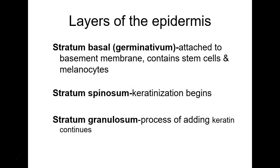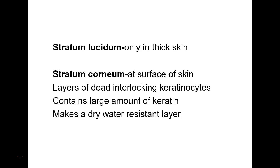Right above that, keratinization begins. Keratin is just a protein found throughout this tissue, not just in hair. Under the microscope it looked spiny, so they named it stratum spinosum. Going further up it looks granular with more keratin being added — that's the stratum granulosum. Higher still is a clear layer called the stratum lucidum, which means clear or translucent.